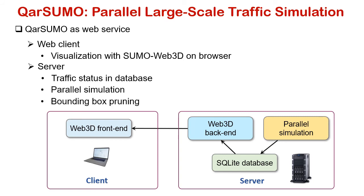For better performance, CarSumo applies a bounding box considering the current user view at the client side, keeping only relevant data extracted from the database and transferred from the server.